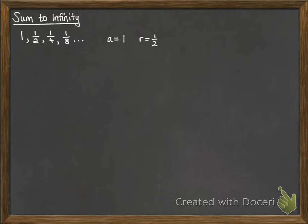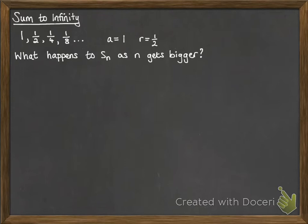So we have our first term and our common ratio is a half. Now what happens if you try to find the sum of that sequence as n gets very big? We're thinking about as n tends towards infinity — if you added up all of those terms, what would it get closer to? If you did 1 plus 1 half plus 1 quarter plus 1 eighth and so on, that's going to get you closer and closer to 2. So as n tends towards infinity, the sum of our first n terms tends towards 2.